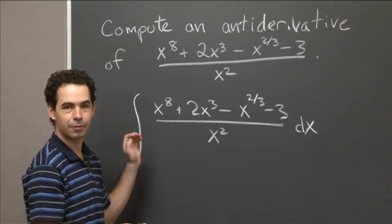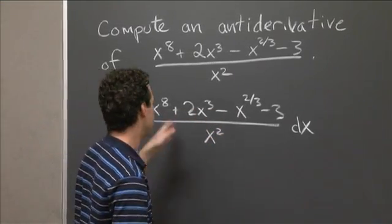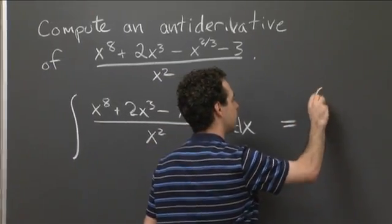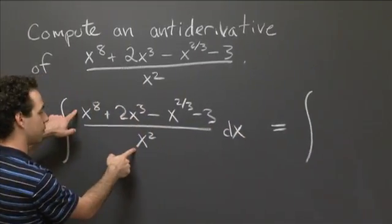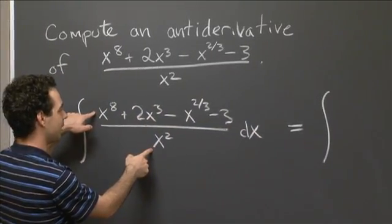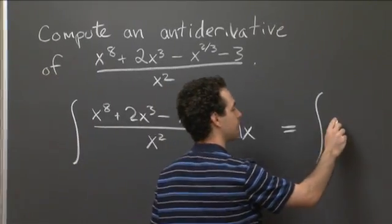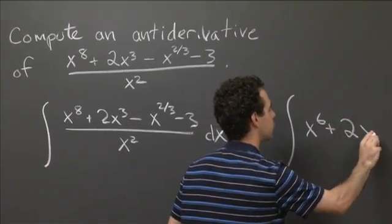So our life will be a little simpler if we write this out by splitting it up into the separate fractions. So if I do that, this is just equal to the antiderivative of x to the eighth over x squared. That's x to the sixth. And 2x cubed over x squared is just 2x.